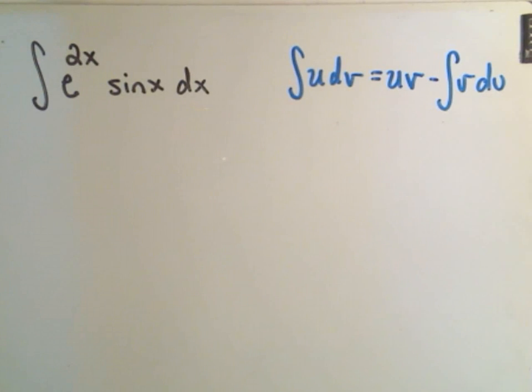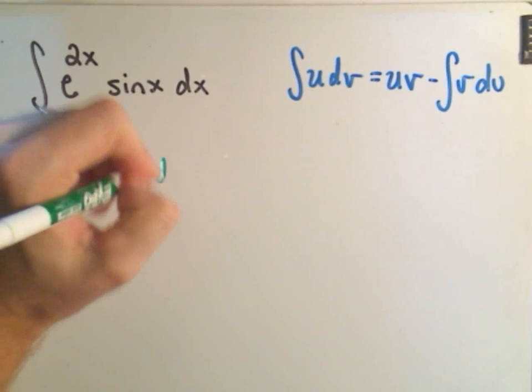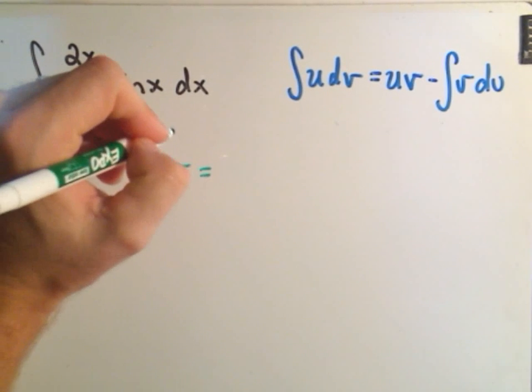Again, I just wrote the integration by parts formula over here on the right. The integral of u dv equals uv minus the integral of v du. All right, in this case we have to pick u, from that we'll get du. We've got to pick dv, from that we'll get v.